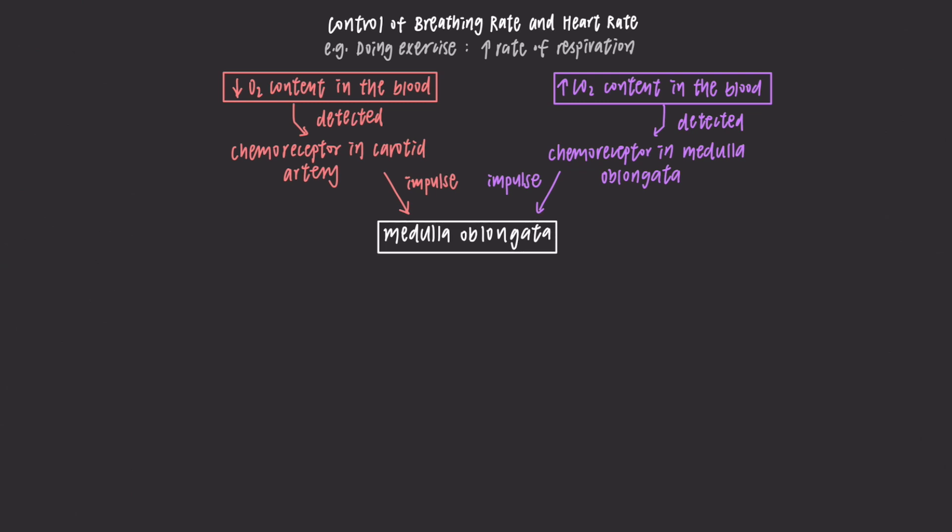Medulla oblongata relies on sympathetic nerves to send impulses to our lungs and heart. It sends impulses to the external intercostal muscle and diaphragm muscle to contract more to increase the breathing rate.